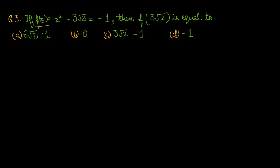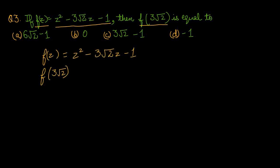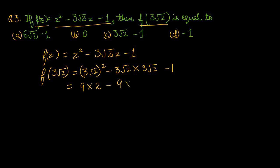Question number 3: if f(z) = z² - 3√2 z - 1, then f(3√2) is equals to. हमें f(z) = z² - 3√2 z - 1 दे रखा है, f(3√2) निकालना है। z की जगह 3√2 fit करेंगे: (3√2)² - 3√2 × 3√2 - 1 = 9×2 - 9×2 - 1 = 18 - 18 - 1 = -1। So option number D is the right one.